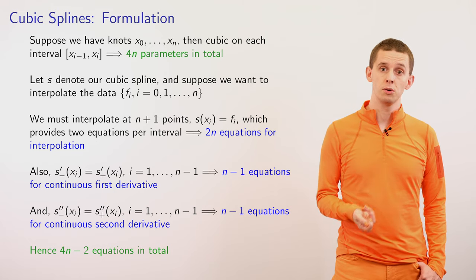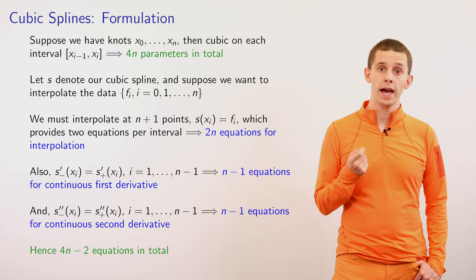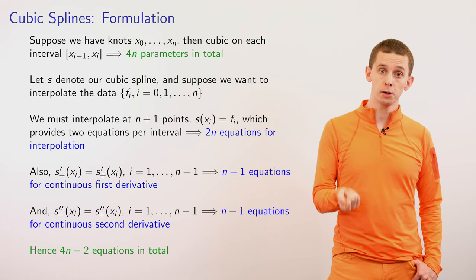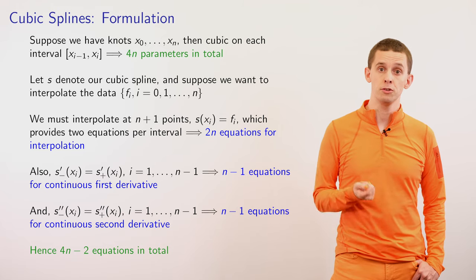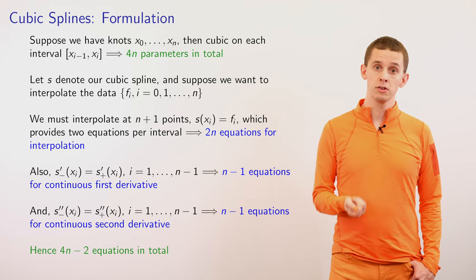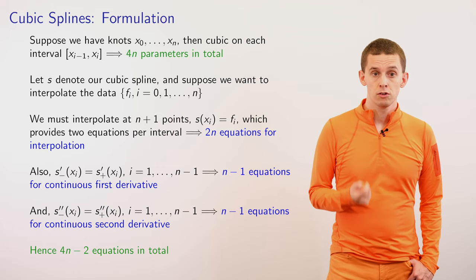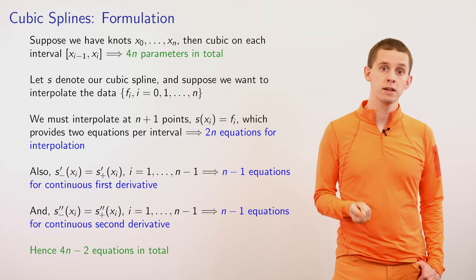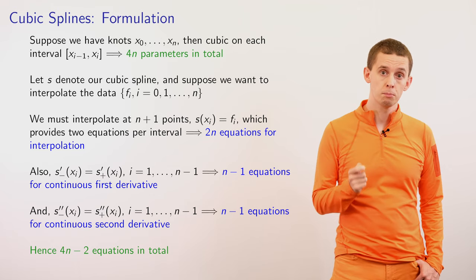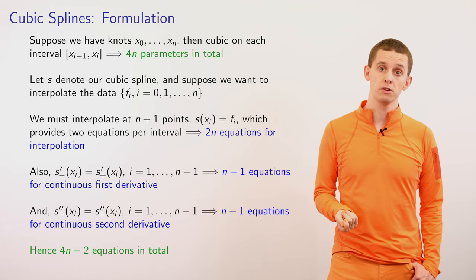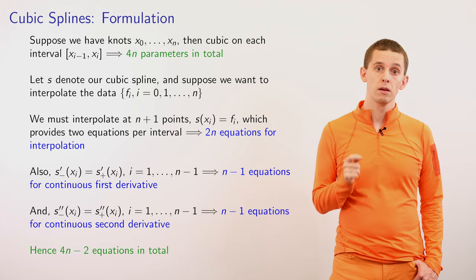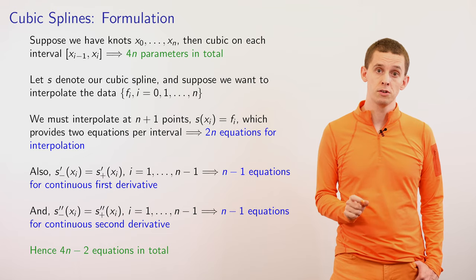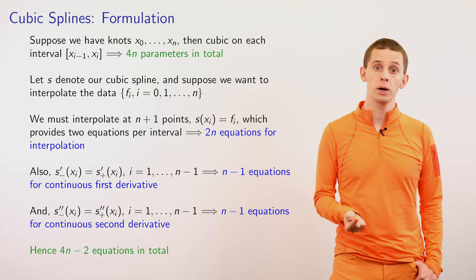Suppose that we have knots at positions x0, x1, up to xn. That gives us n separate intervals from x_{i-1} to x_i. In each one of those intervals we're going to define a cubic with four parameters, giving us 4n parameters in total. We need equations to set those parameters. We'll have data points from f0 up to fn, and the first requirement is that our piecewise polynomials match the given data points. Each cubic in an interval must match the data at either end, giving two equations per interval, and therefore 2n equations in total.